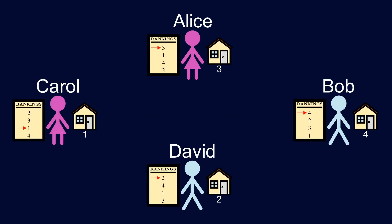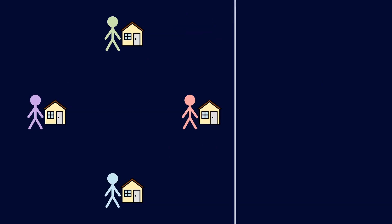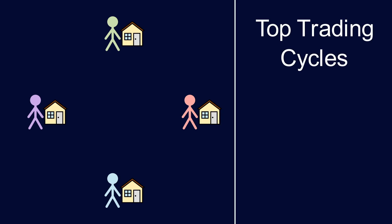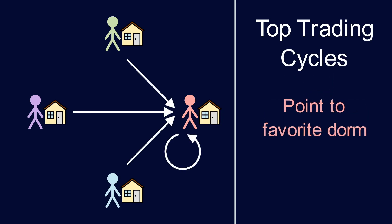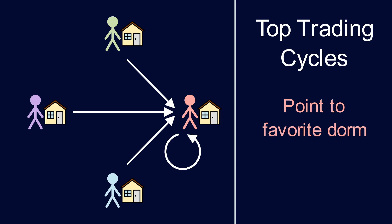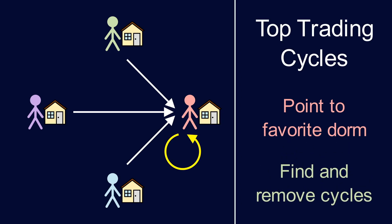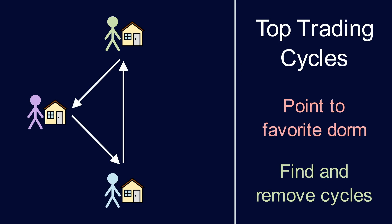So in the end, Carol didn't get a better dorm, but she also didn't get anything worse. Meanwhile, everyone else upgraded to their favorite dorm. This algorithm is called top trading cycles, which has just two steps. Step one: everyone points to the person who has their favorite dorm — this can just be yourself if you like your current dorm the most. Step two: find and remove every single cycle within this graph. Then we repeat — everyone points to the dorm they like next best, and then we identify and remove any cycles. This algorithm just repeats these two steps, so it's pretty simple.